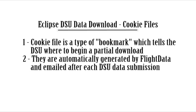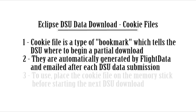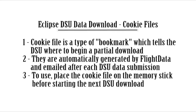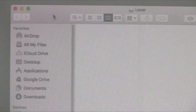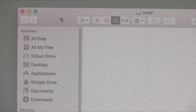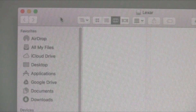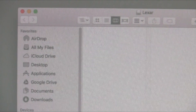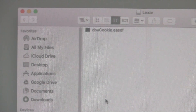Cookie files are automatically generated every time you upload DSU files to flightdata.com, and they will be emailed to you when the upload process has finished. To use this file, simply place it onto the USB memory stick before your next download out of the DSU. Be sure not to change the name of the file, and be sure that no other files are present on the USB stick when you connect it to the aircraft.